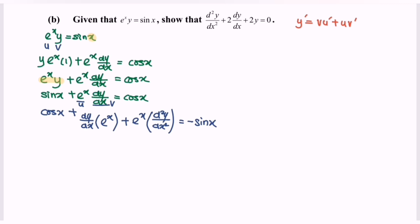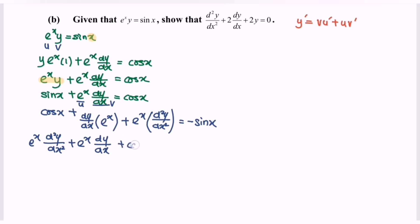The right-hand side becomes negative sin(x). Rearranging the situation, we have: the second derivative multiplied with e^x, plus e^x multiplied with the first derivative, then plus cos(x), plus sin(x) equals 0.